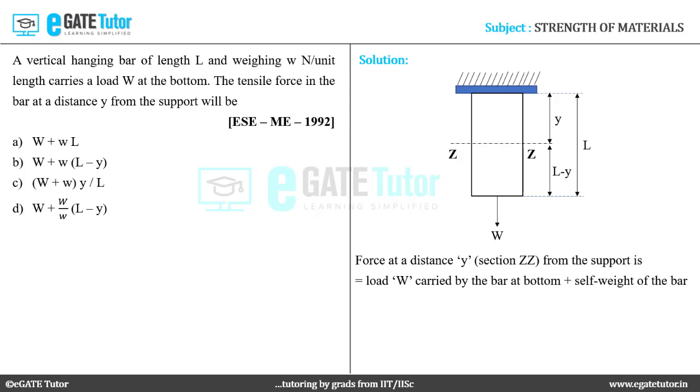Therefore, this can be written as force is equal to W plus W is the self-weight per unit length. But this weight is acting for a length of L minus Y. Therefore, it is W into L minus Y.